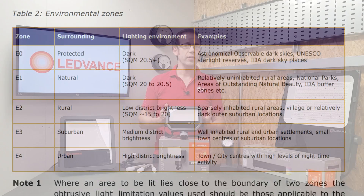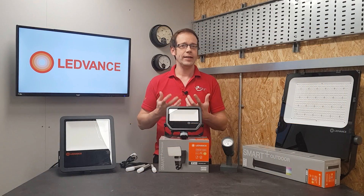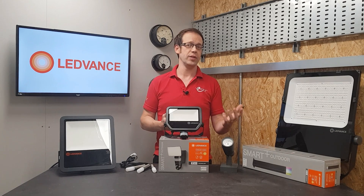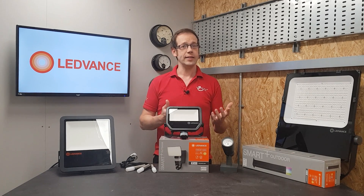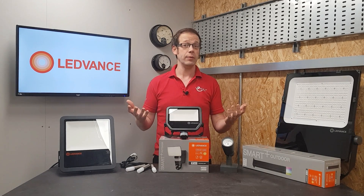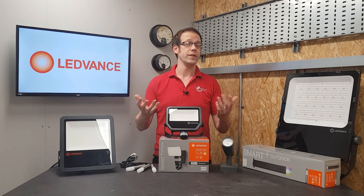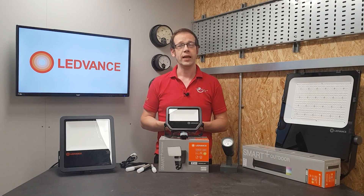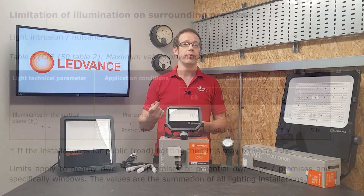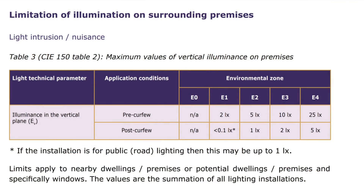So you can see there's going to be vastly different requirements between somewhere that has a protected status due to sensitivity to light and a city center that is probably already well illuminated for safety and the reduction of crime. This is borne out in Table 3, where we find values for the maximum amount of light allowed to hit a neighboring property.